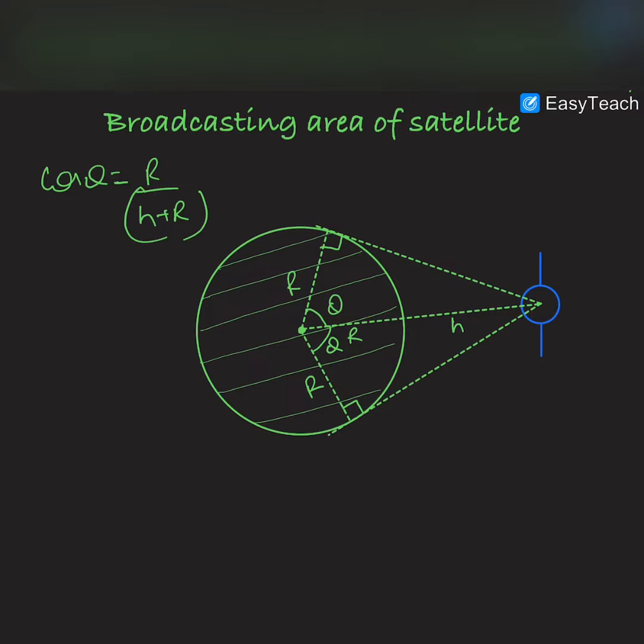So this is cos theta. We know that the area of a sphere is the solid angle times r squared. The solid angle is equal to 2π times 1 minus cos theta, where this cos theta is the half apex angle of this cone.